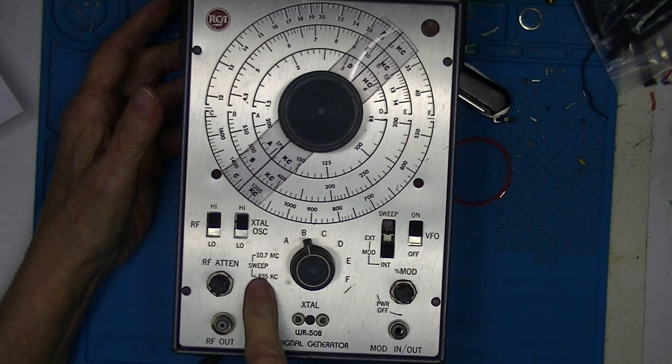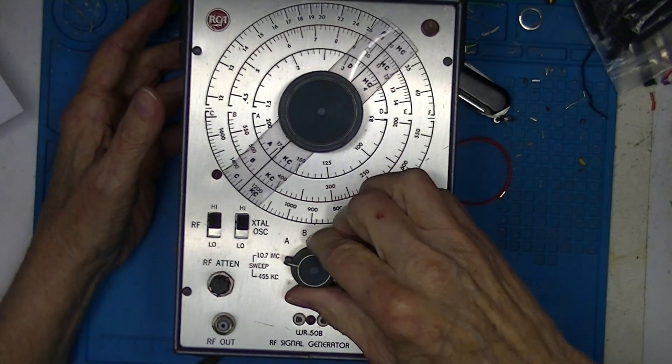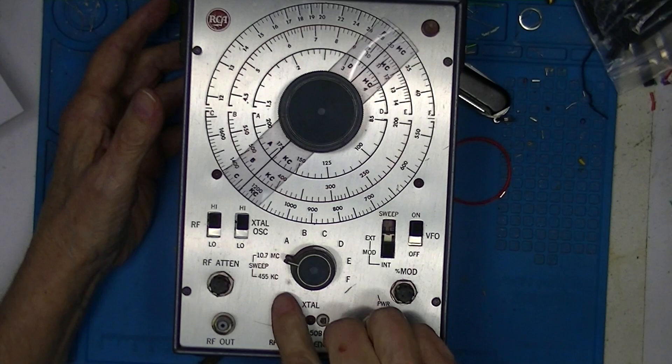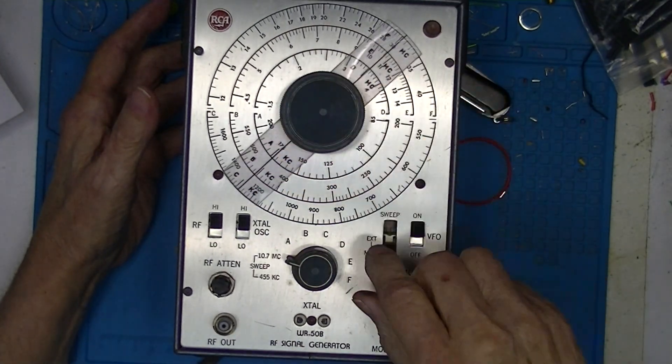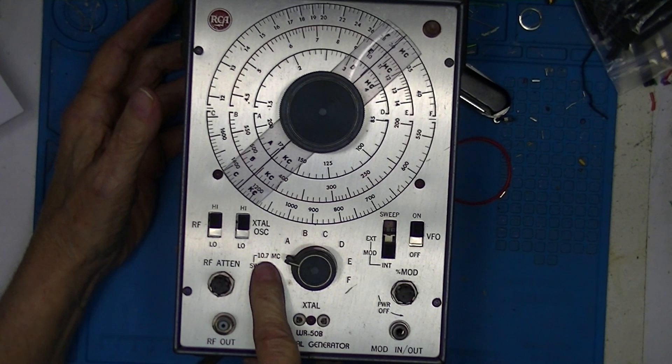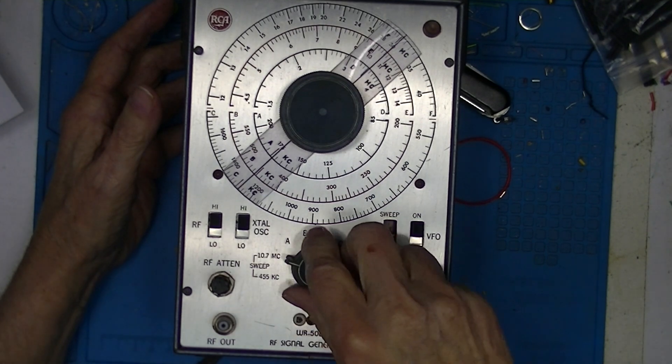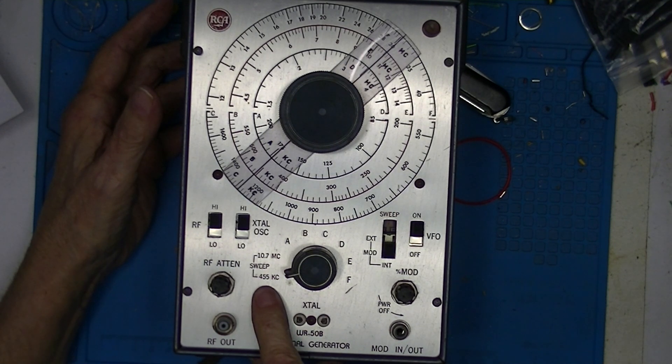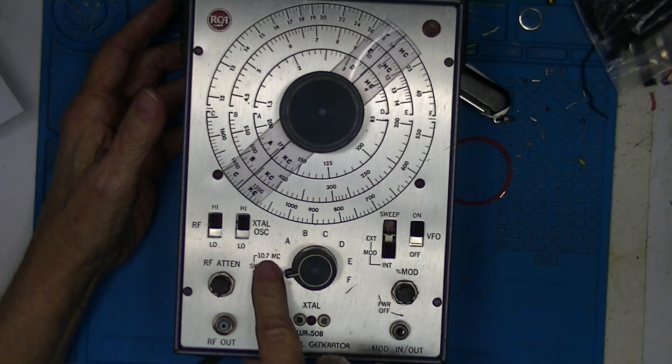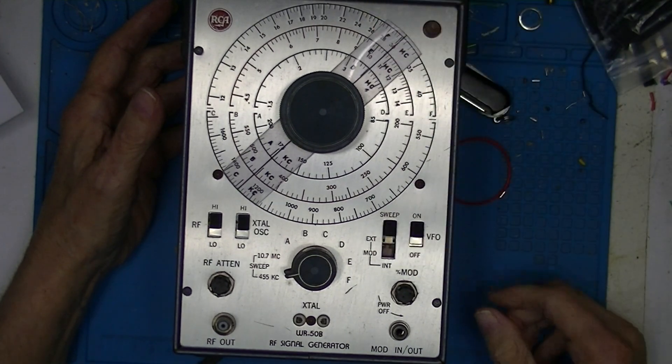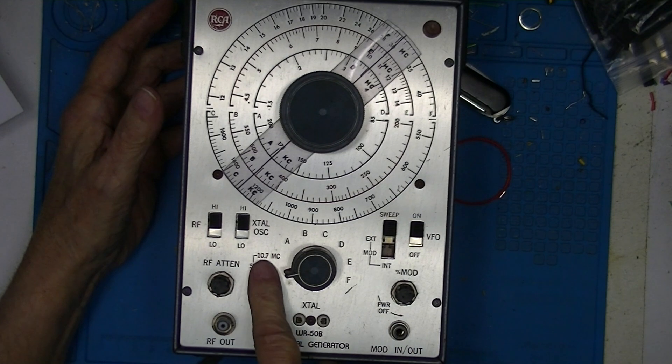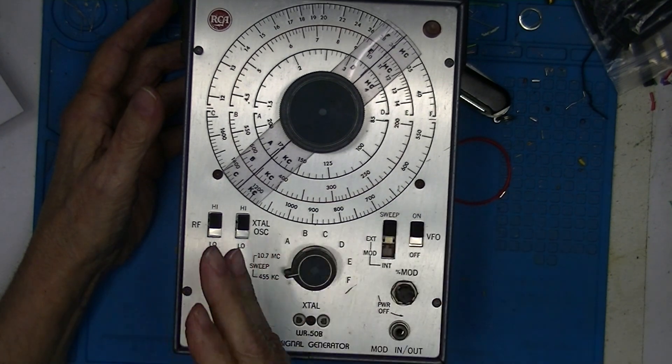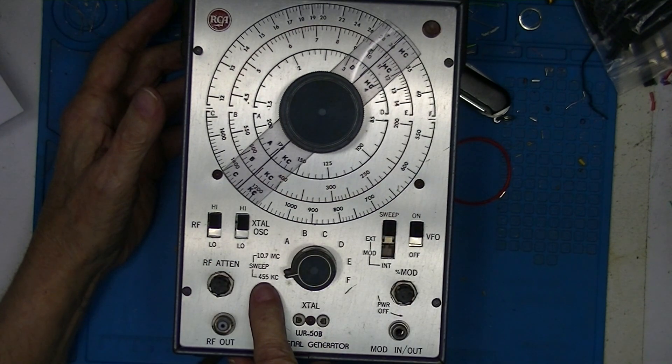These two positions in red are marked sweep. They're selected here or here and replace these frequencies. The oscillator here has a nominal output center frequency of 10.7 megacycles, megahertz today. And here the output is 455 kilocycles or kilohertz. This frequency can be swept by putting it in this position, so we can cause this frequency center frequency nominal to be swept or this center frequency to be swept.